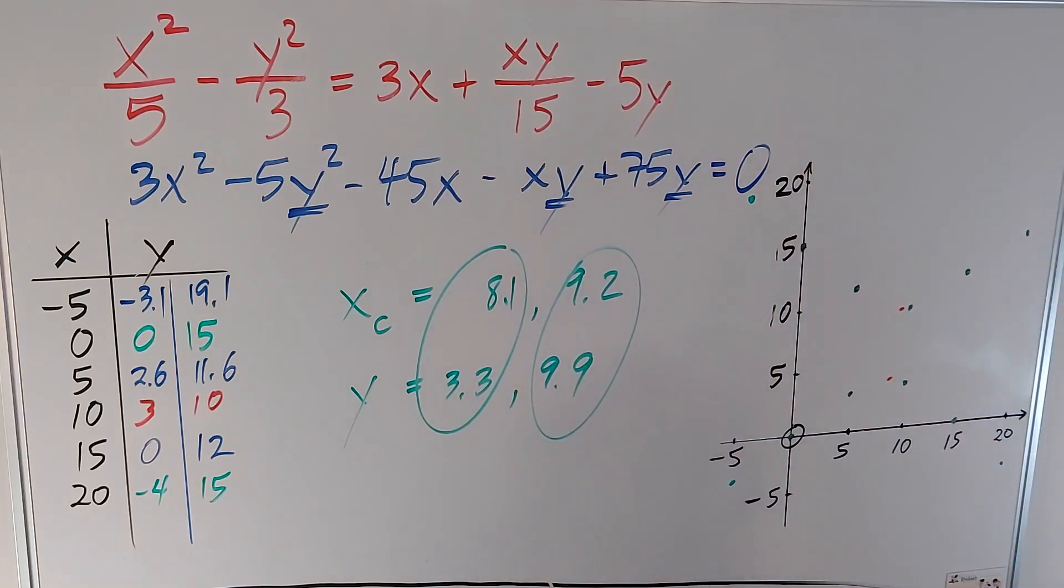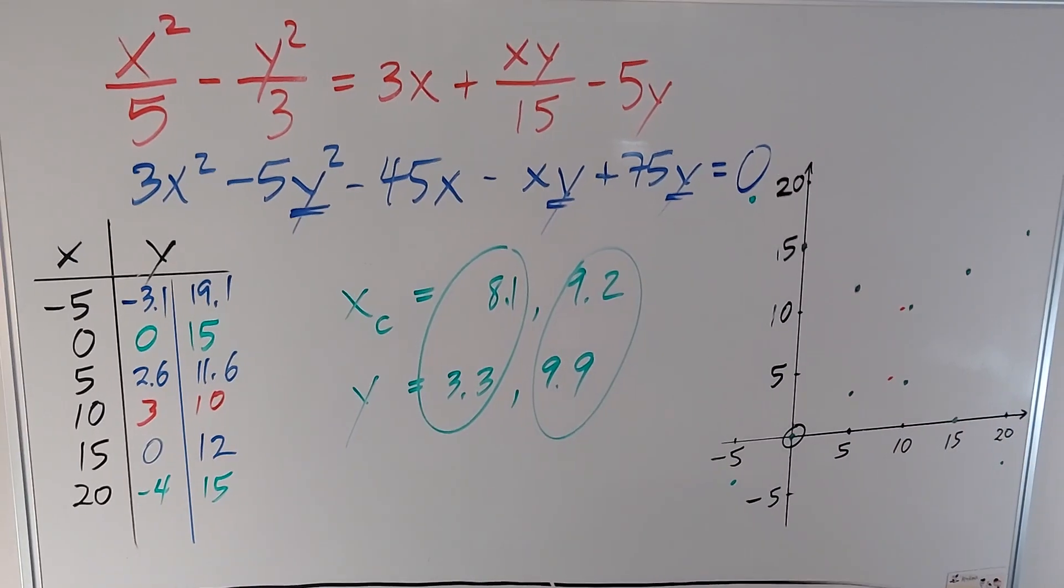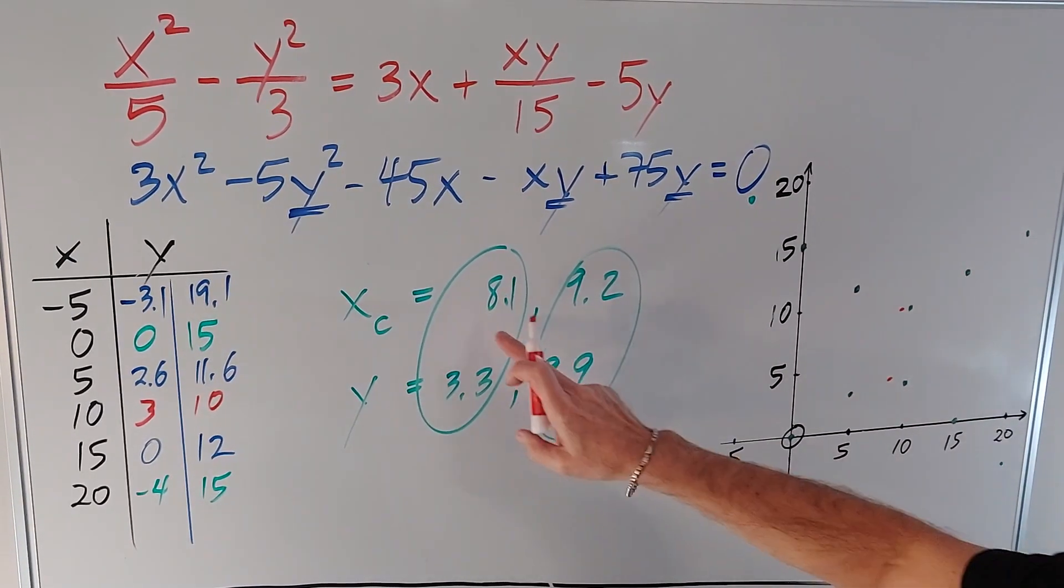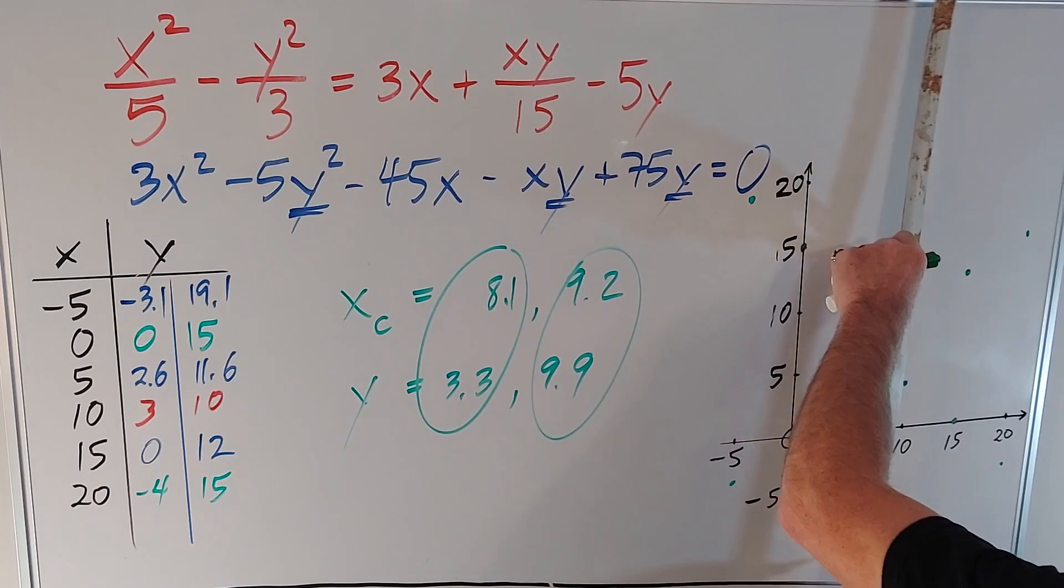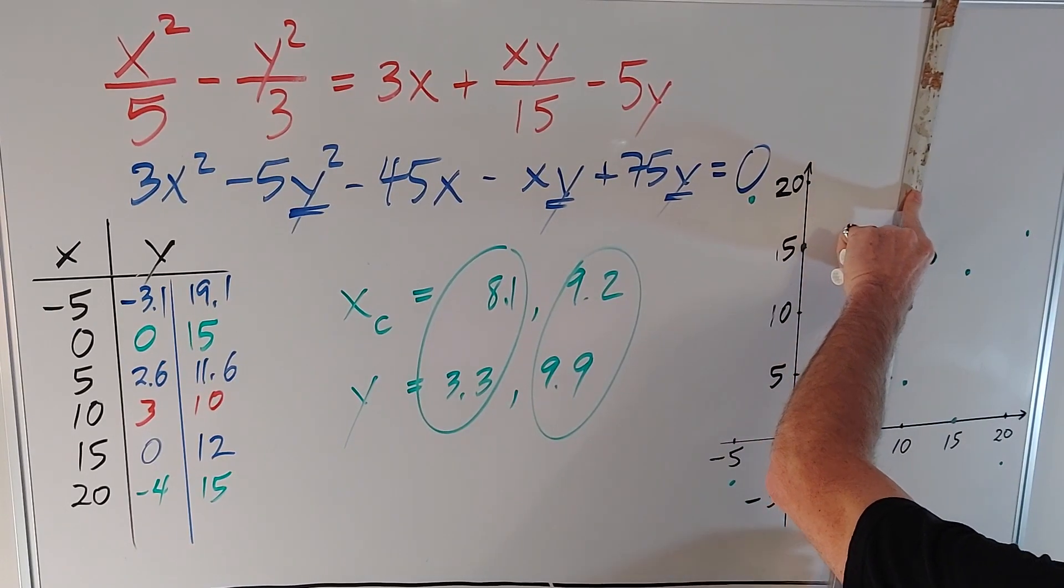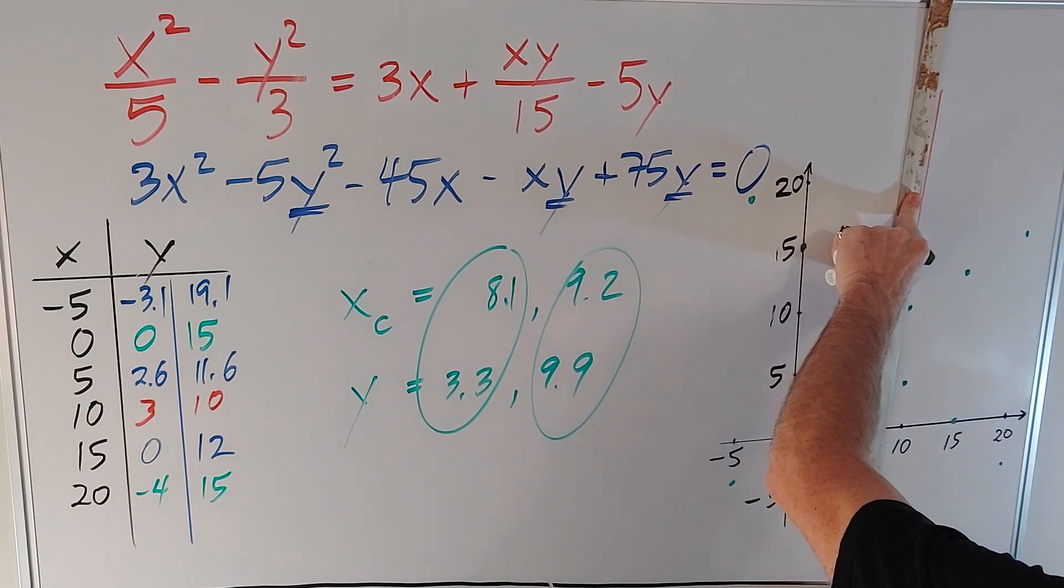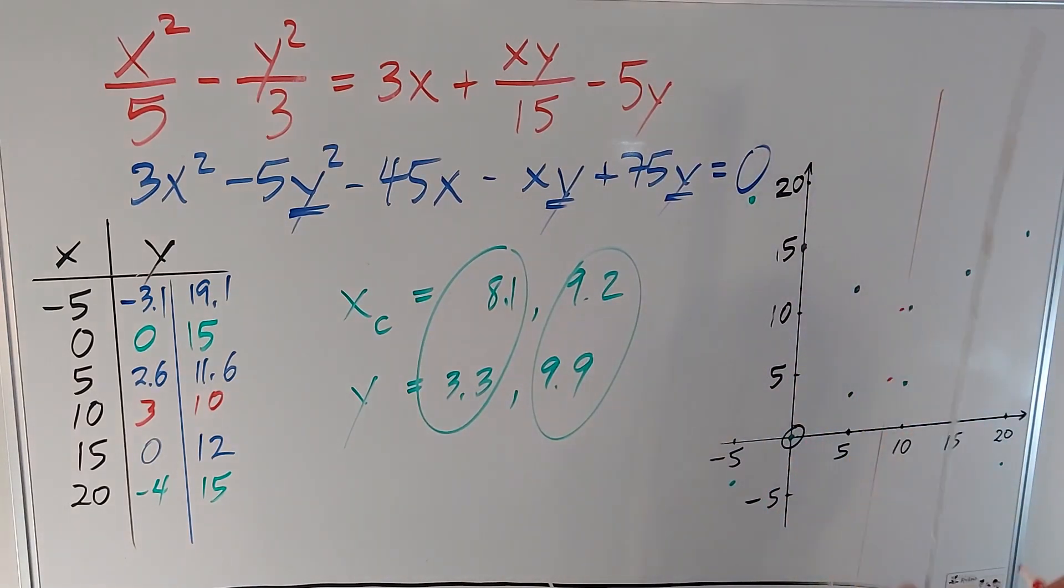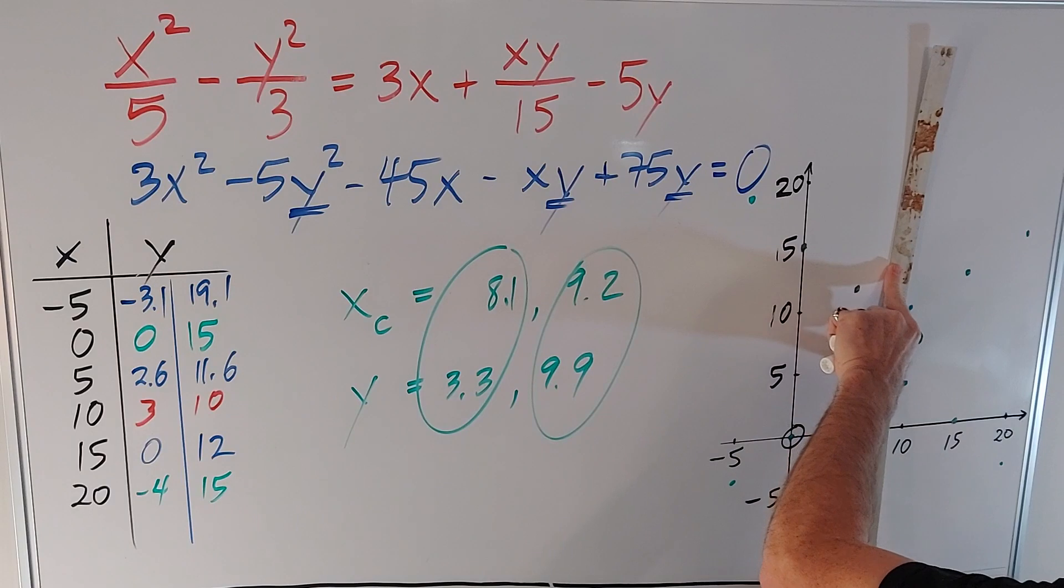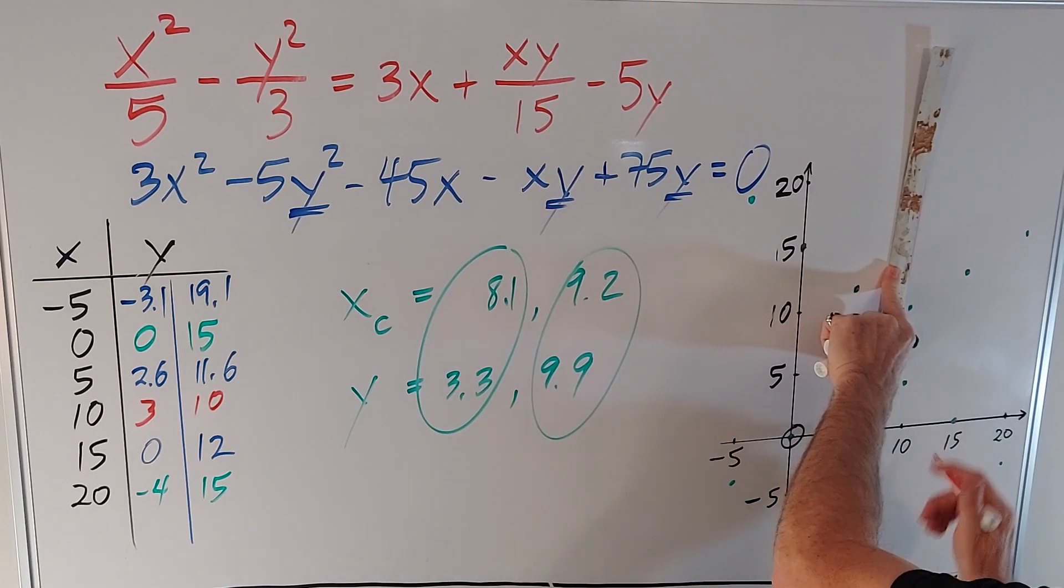There we go. So, they're not on a vertical line. They're on a bit of an angle because the x values are different. So, if I put a line through there, just to give you an idea, whoops, that line is y = 6x - 45.